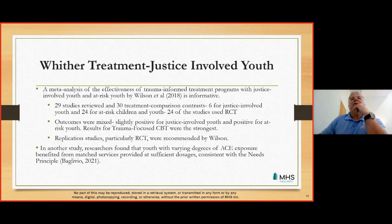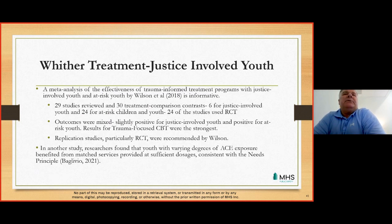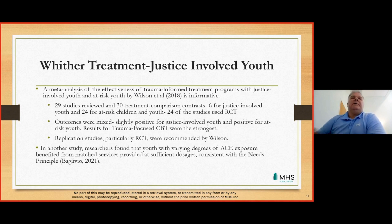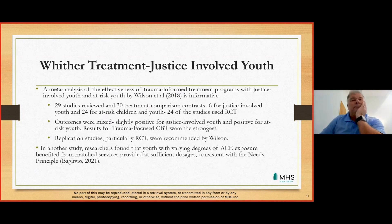Moving along to treatment — for youth, there's a meta-analysis done by Wilson, published in 2018. Wilson reviewed 29 studies: six were for justice-involved youth and 24 for at-risk children. Twenty-four of the studies were randomized control trials, which many consider the gold standard in research. The outcomes are mixed — slightly positive for justice-involved youth and positive for at-risk youth.